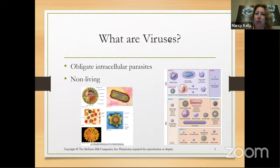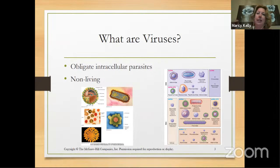They need to live inside another organism in order to survive. We don't consider them living, though, because they don't satisfy one of the criteria for life — they can't reproduce on their own. They need to be inside a host cell in order to reproduce. And that's why we consider them not living.